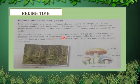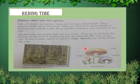Mushrooms are plants that are not green. They get food from the humus in the soil. A mushroom has an umbrella-like cap on the top — you can see here, these are mushrooms. They are not green plants. The stem is called the stipe. Spores are made inside the cap, and these plants grow spores inside their caps.